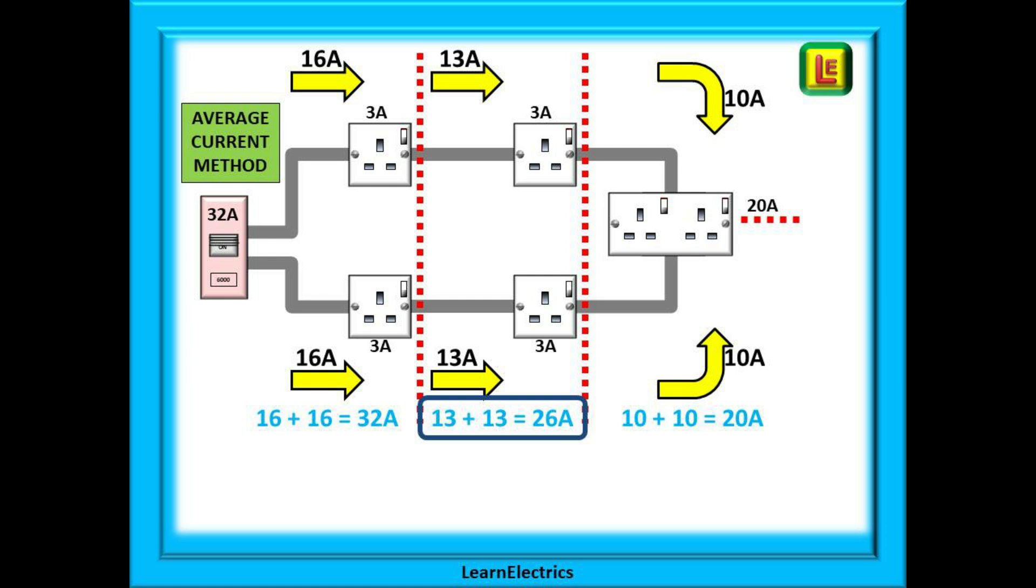Now add up what the top and bottom first sections are carrying. Section one of the upper plus section one of the lower is 16 amps plus 16 amps, or the full 32 amps. The middle section, 13 amps plus 13 amps added together to give 26 amps, and finally the end section, 10 plus 10 or 20 amps. You can see that the middle section is 26 amps, our average current.